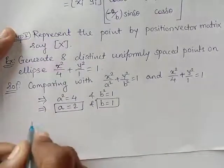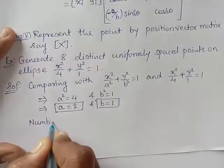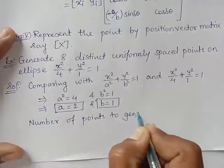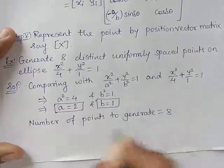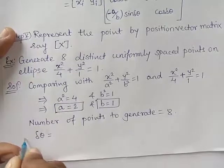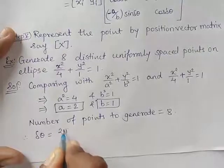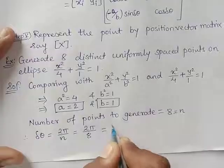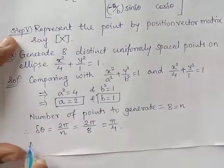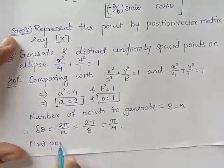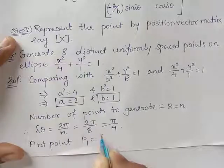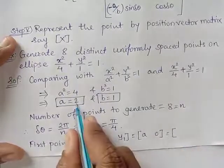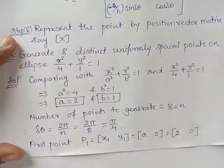Number of points to generate: 8. Delta theta is 2π by n, that is 2π upon 8, so it will be π by 4. Now the first point P1 is (x1, y1) = (a, 0). Since a is 2, P1 is (2, 0). Our first point is (2, 0).